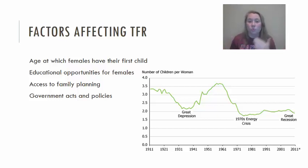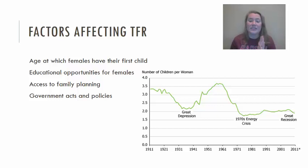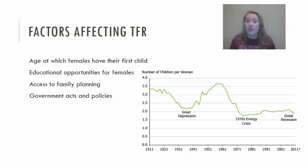Then going into the World War II era and into the 1950s, we saw a huge baby boom — you've probably heard of the baby boomer generation. The total fertility rate in the United States spiked up above three and a half children per woman. Then in the late 1960s we see a sudden drop, primarily due to access to birth control pills, which helped women plan when to have children and led people to delay pregnancies.